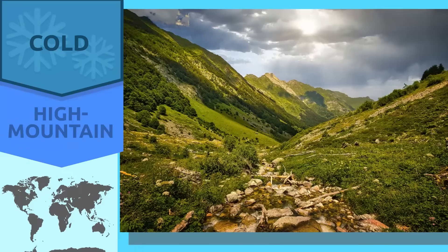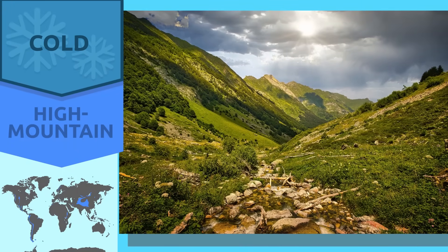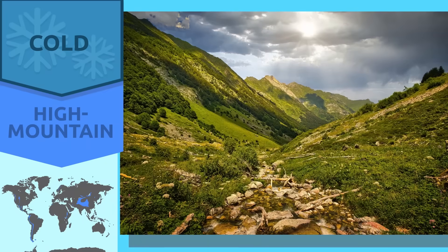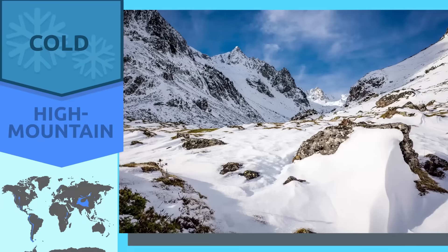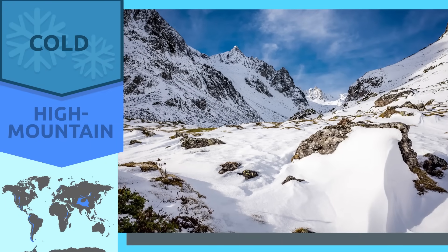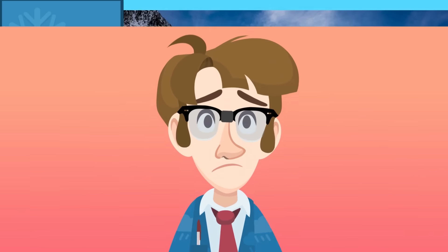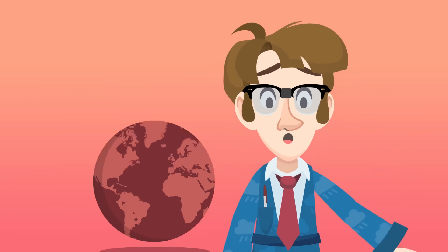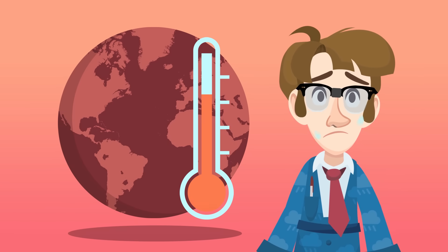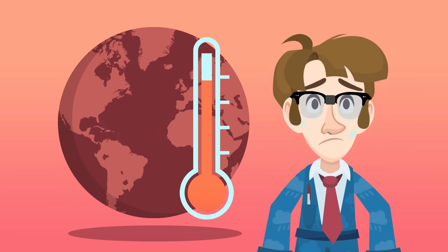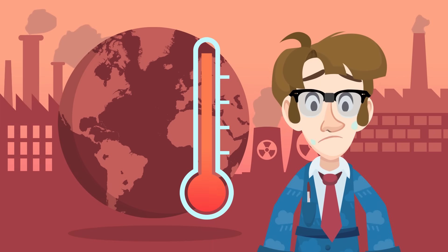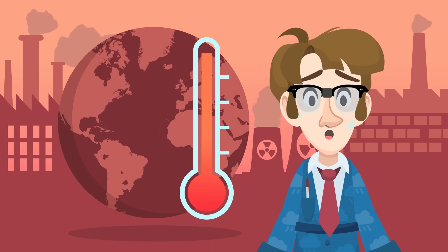The high mountain climate is found in the highest peaks of mountains. Temperatures are very low in winter and mild in summer, and precipitation is heavy. Over the past centuries, the climate on Earth has been changing as a consequence of global warming — the increase in global temperature owing mainly to human activity.